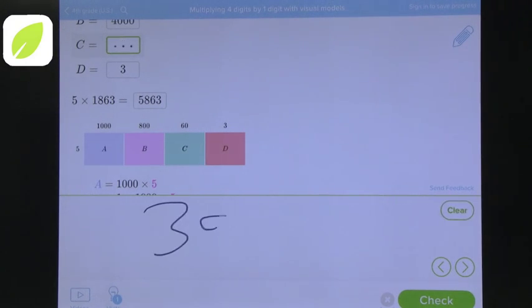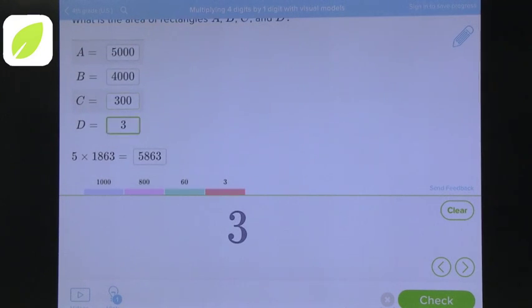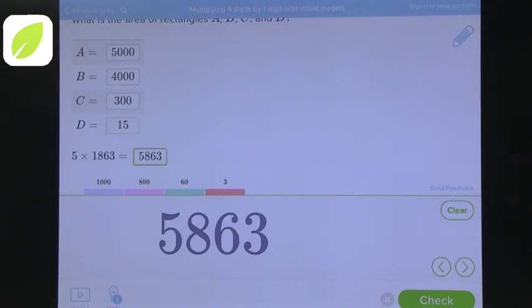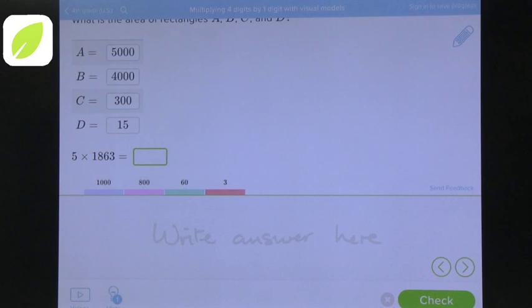You can erase 300, you can erase and write 15, and now add again. That would be 9,315.